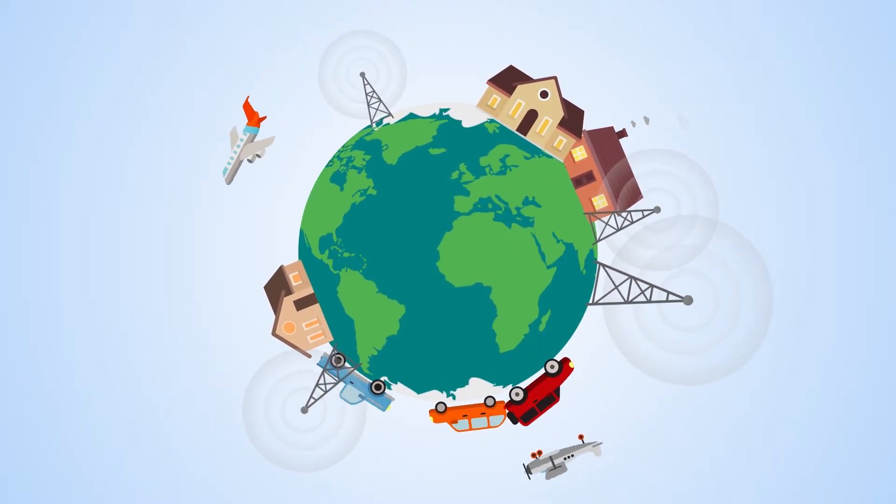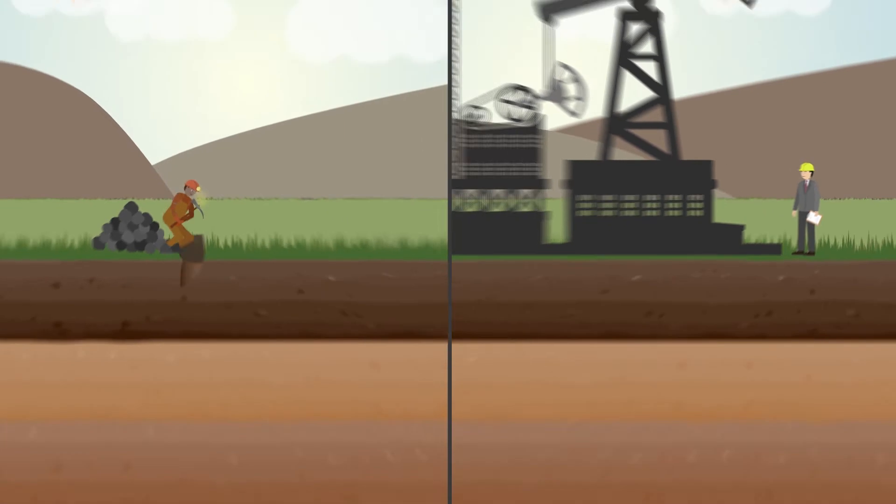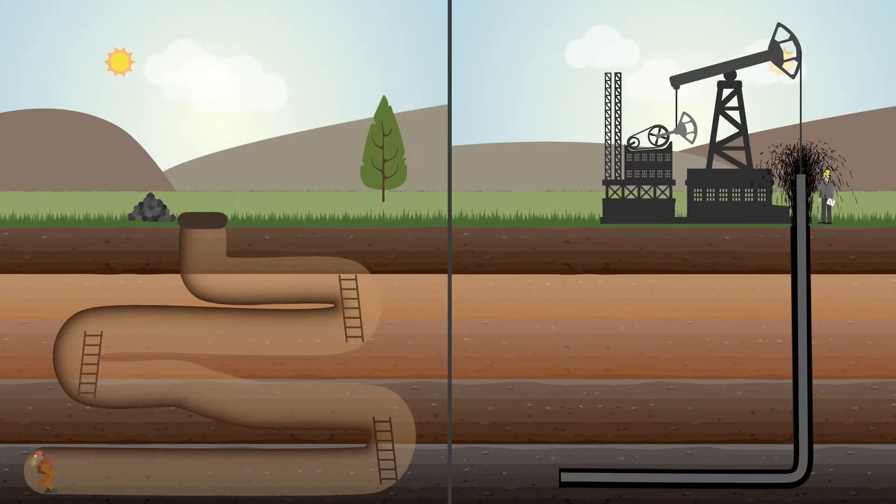Modern life is energy intensive. Energy comes from the earth, traditionally in the form of fossil fuels like coal and oil.